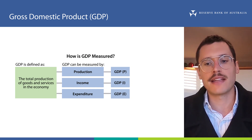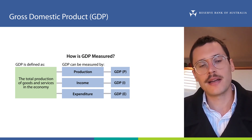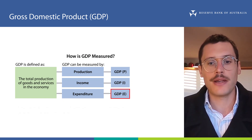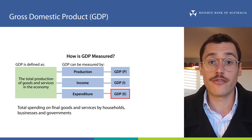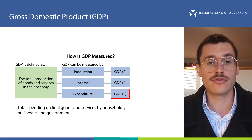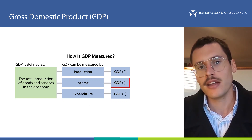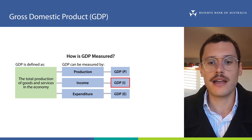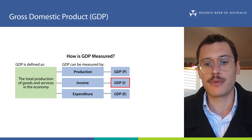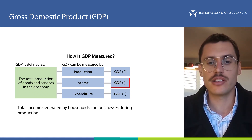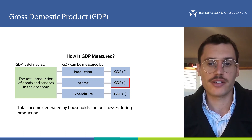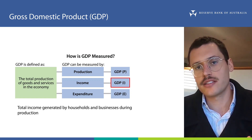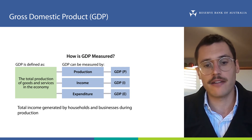The first measure is GDP expenditure, or GDP-E. This is the measure you'll see the most. GDP-E captures all of the spending on final goods and services by households, businesses, and the government. GDP income, or GDP-I, measures the total income generated by households and businesses in the process of producing goods and services. For households, the largest component is their wages; for businesses, this is their profits. Both of these are adjusted for the taxes and subsidies on the production of goods and services.